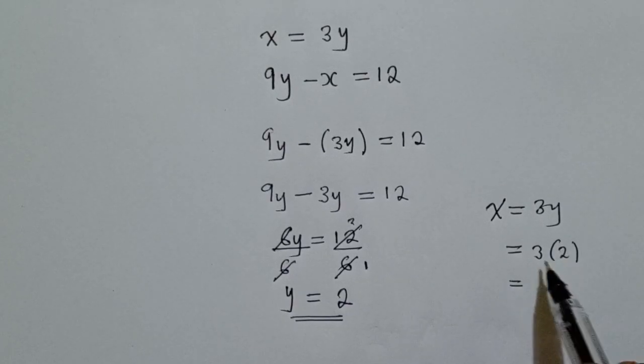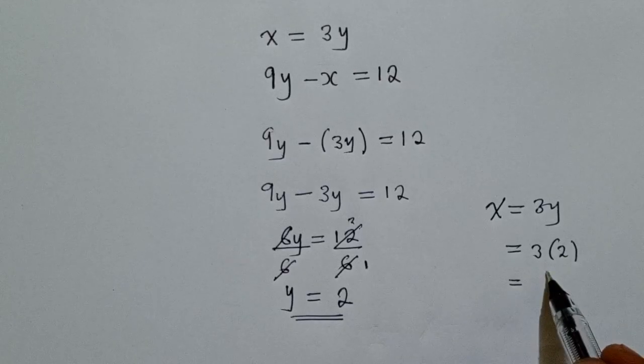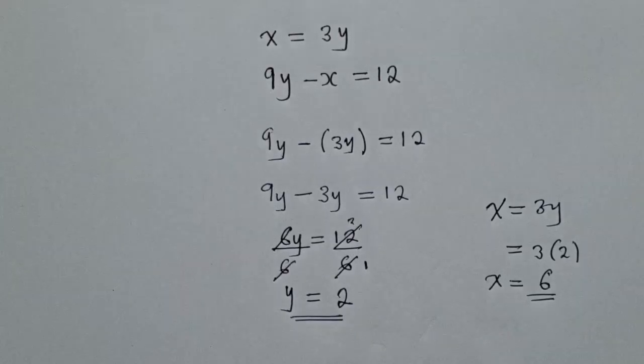So these brackets, they mean we multiply. So this will be 3 times 2, which will give us 6. So the value of X is 6 and the value of Y is 2.